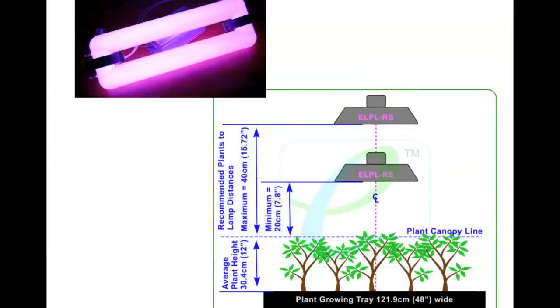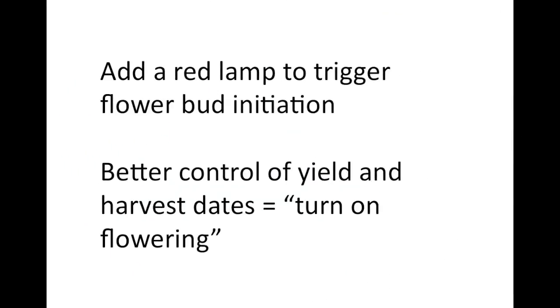The other thing about having the lamps run cooler is you can put the lamps right on top of the plants. We're recommending between 8 inches to 16 inches above the plant canopy. We can put these wonderful new lamps directly on top of the plants. It's going to give you better light, more light on the plants, and that gives you better yields and quicker turns.